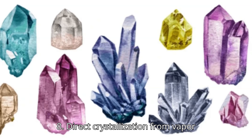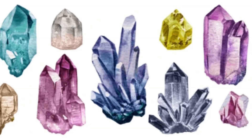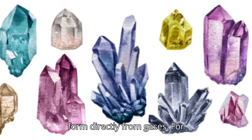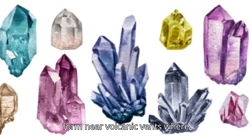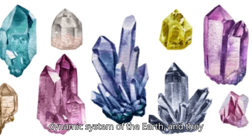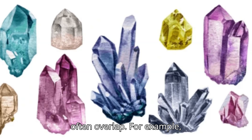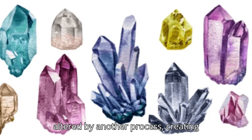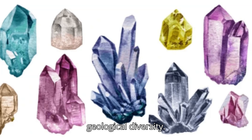8. Direct Crystallization from Vapor. In volcanic environments, some minerals form directly from gases. For instance, sulfur crystals can form near volcanic vents where sulfur-rich gases condense. Each of these processes is part of the dynamic system of the earth, and they often overlap. For example, minerals formed in one way may later be altered by another process, creating complex mineral associations and contributing to the earth's rich geological diversity.